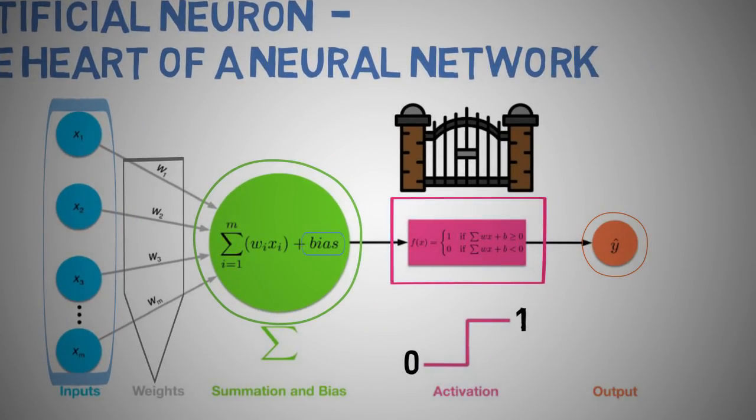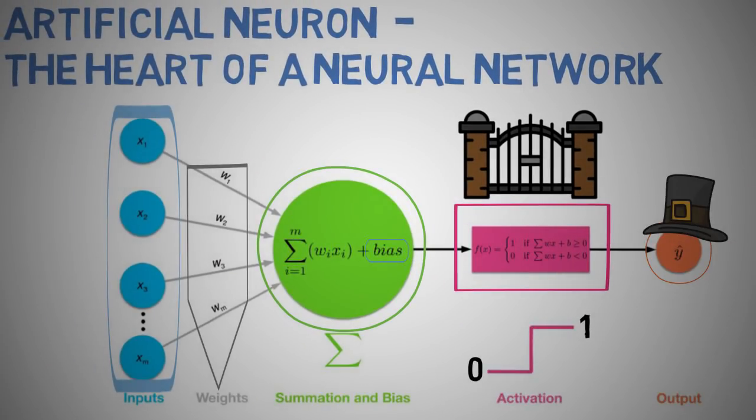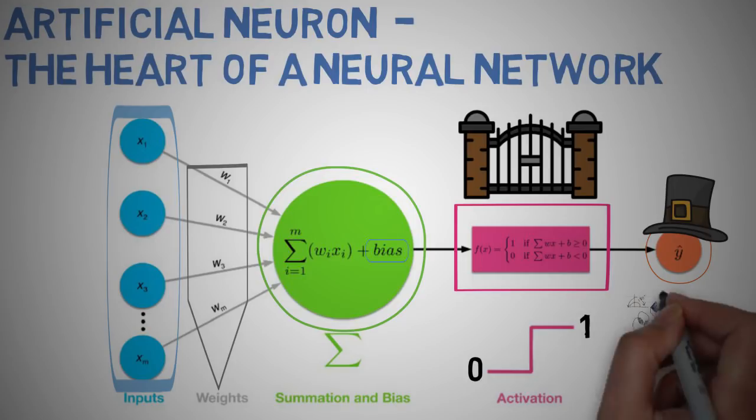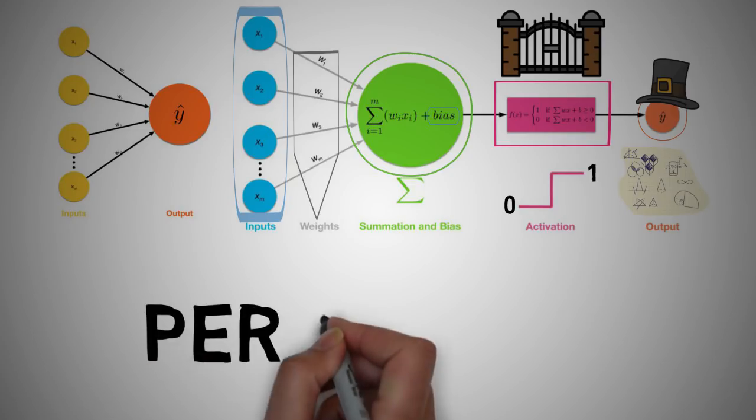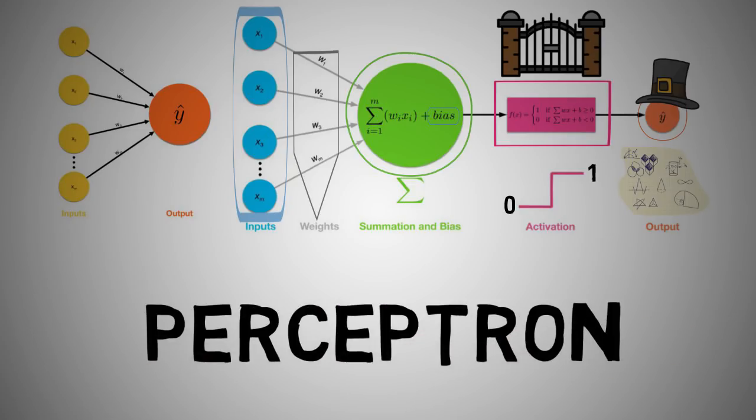So the output of our activation function is our output prediction also known as y hat. Y is our actual observation and y hat is the value that the network predicted. These outputs can be continuous or regression values, binary values or even categorical values. So this configuration can be shrunk to a simpler representation known as a single layer perceptron. All what we discussed earlier happens in this one node.